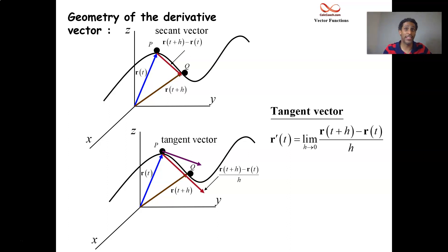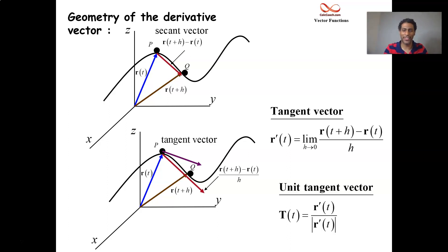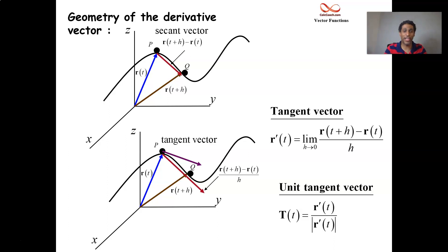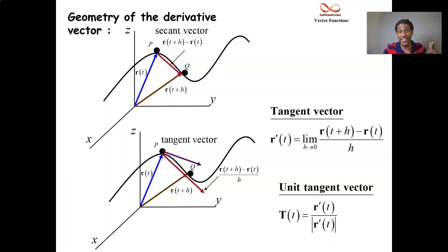We're going to find it useful to get the unit tangent vector, which is velocity divided by speed — the magnitude of velocity. All right, let's end the video here. Thank you for watching. My name is Nakaya Rimmer. Comment down below, like and subscribe. Ask me any questions if you'd like help. I'll see you in the next video. Bye.